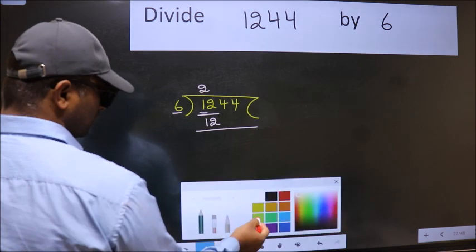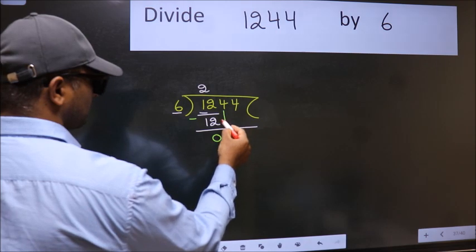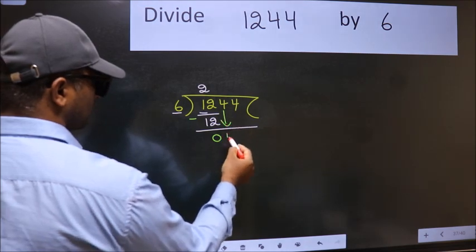Now we should subtract. We get 0. After this, bring down the beside number. So 4 down.